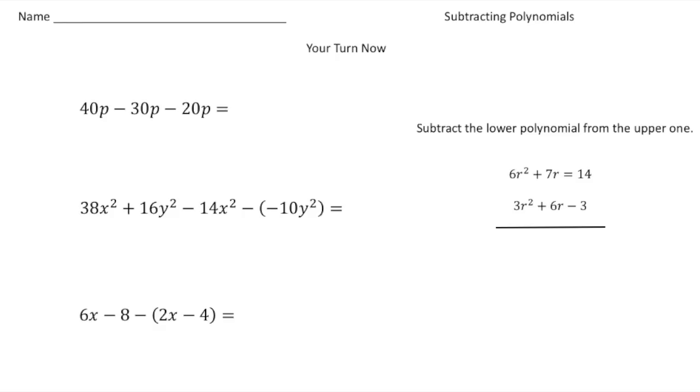Welcome back. Let's see how you did with these practice problems. The first problem: we have 40p minus 30p minus 20p. Because they're all like terms, we can subtract. So 40 take away 30 gives us 10p, and then 10p minus 20p gives us negative 10p.